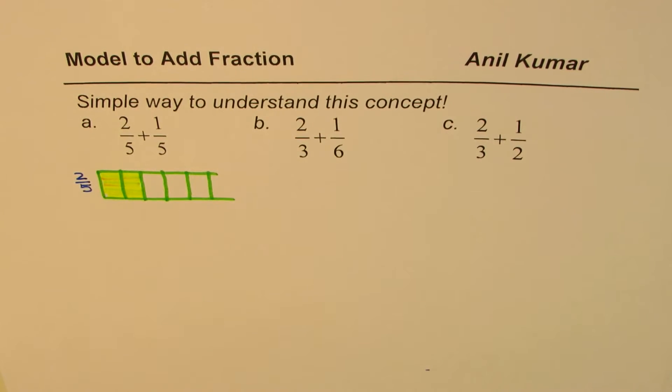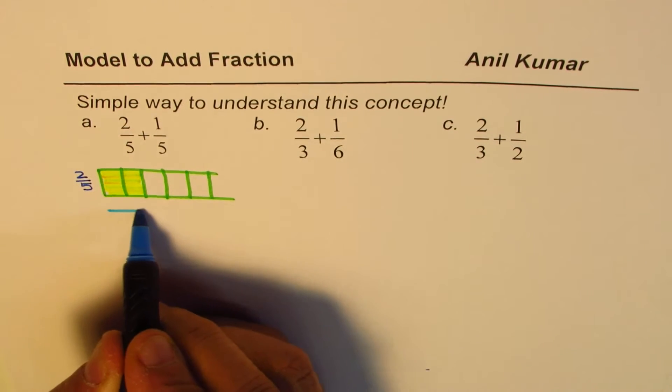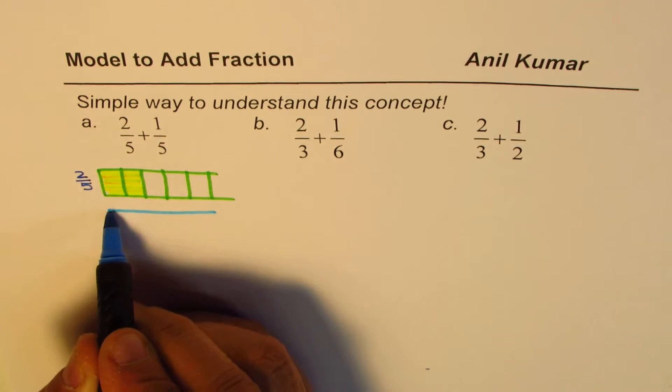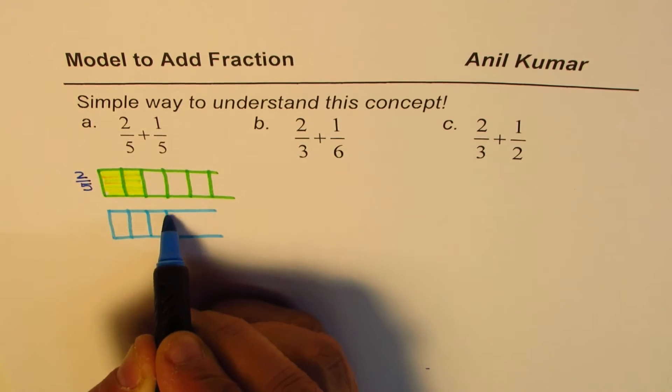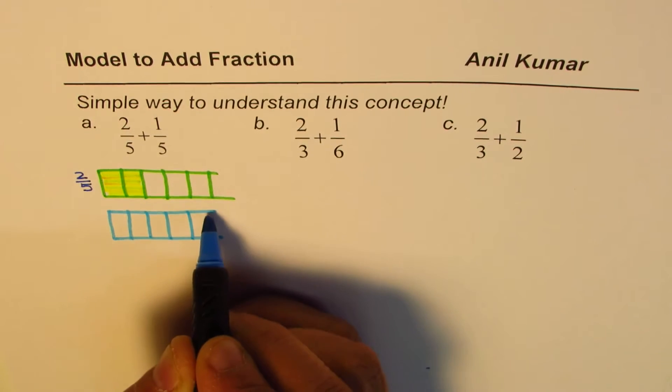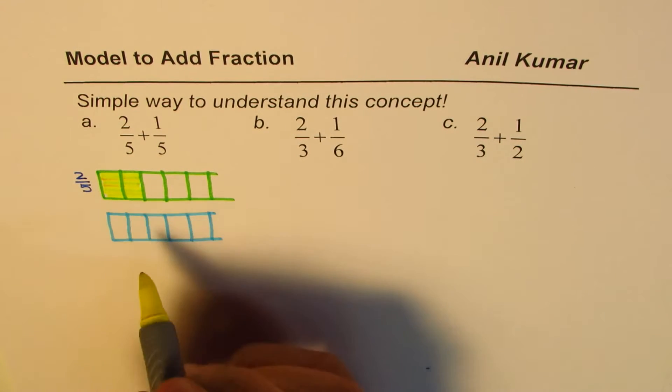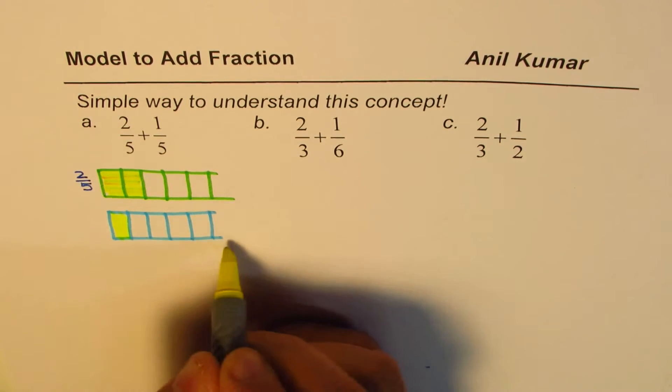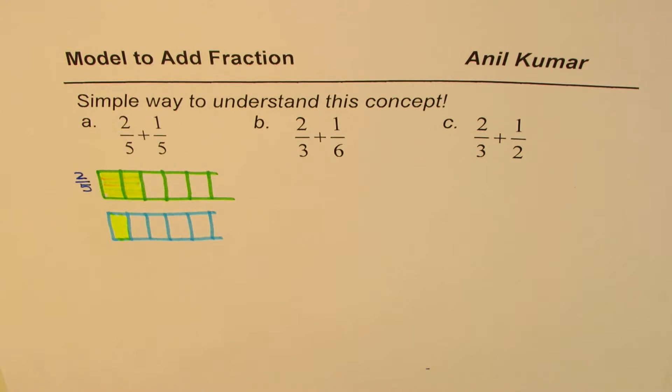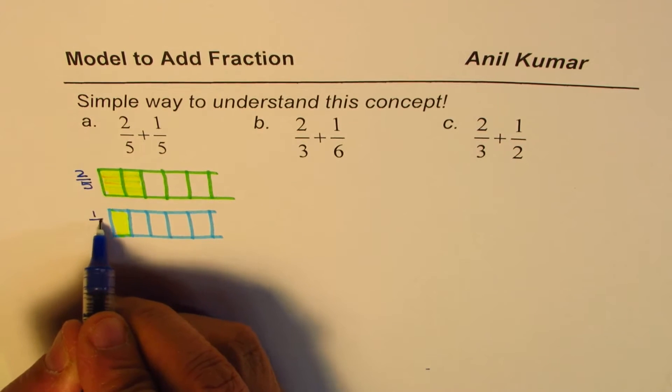Now what do we need to do? We need to add this fraction with another fraction which is 1 out of 5. So let me make another rectangle which is almost of the same size. So again 1, 2, 3, 4 and 5. 1 out of 5 means each portion is 1 fifth. Do you see that? A whole has been divided into 5 equal parts. So each part is 1 fifth. That is 1 out of 5.